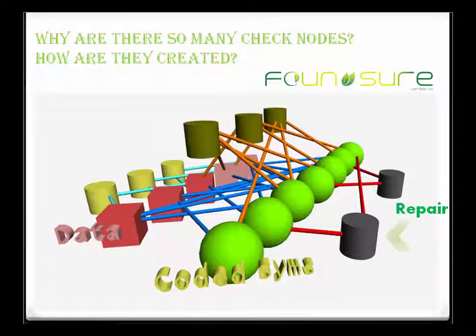What's not very much known and used are the other check nodes. The ones represented by black cylinders are for a known problem in the storage community called repair, or regeneration of code blocks. They are simply used as appropriately selected checks to repair some of the coded blocks easily without the hassle of decoding.